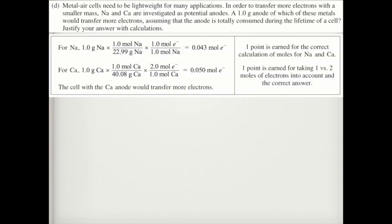So notice for sodium, I'm going to go from one gram of sodium into moles of sodium. And then because for the sodium to become an ion, one electron is involved, it's going to be one mole of electron for every one mole of sodium. In contrast for calcium, it's going to be the same thing, except now instead of one mole of electron, it's going to be two moles of electrons. And so when you get your two answers, the answer is going to be calcium since it produces more electrons. So you got one point for the correct calculation of moles of sodium and calcium, and then one point for taking one versus two moles of electrons. For noticing that calcium has two moles of electrons for every one mole of calcium.